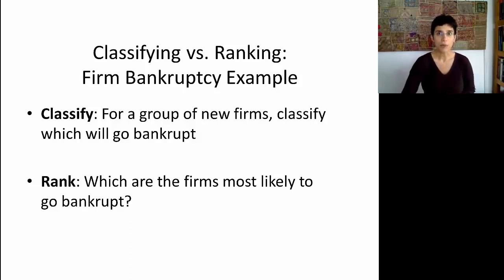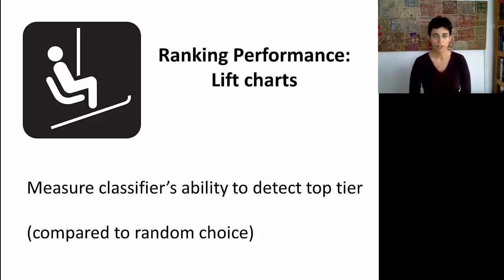When we're interested in ranking, we're going to use a different type of performance measure, and actually this is going to be a chart. These are called lift charts, also known as gain charts, and what they do is they measure the classifier's ability to detect the top tier or the bottom tier. We're going to have a benchmark here, which is just random choice. So think of direct marketing, where you're trying to identify the customers who are most likely to benefit from some offer. You're going to compare your algorithm compared to a random choice, where you just choose, say, any 10% of your customers. So let's look at the lift chart.